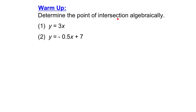Determine the point of intersection algebraically. So here I have line number 1, y equals 3x, and line number 2, y equals negative 0.5x plus 7. This is a skill you learned in grade 10 — how to find the point of intersection. See if you can remember how to do it, so pause the video and try.